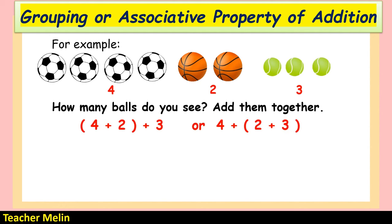The number sentence can be written by grouping 4 and 2, then adding 3: 4 plus 2 equals 6, and 6 plus 3 equals 9. Or, copy 4 and group 2 and 3: 2 plus 3 equals 5, and 4 plus 5 equals 9. Both give the same answer of 9.